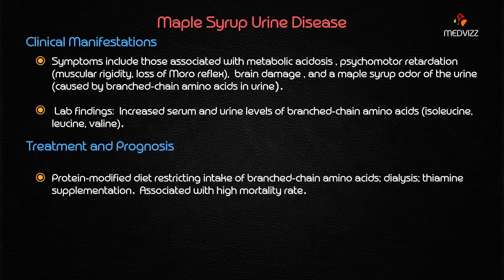The clinical manifestations of maple syrup urine disease include symptoms associated with metabolic acidosis, psychomotor retardation with muscular rigidity, and loss of the Moro reflex — both of which are evident from our case. There is also brain damage, mainly due to brain edema with gliosis, and a maple syrup odor of the urine caused by the branched chain amino acids excreted in the urine.